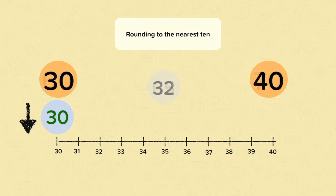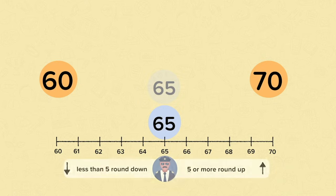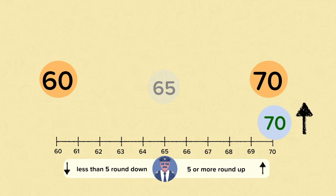Let's look at another example, this time 65. It's between 60 and 70. If we put it on the number line, we still can't see whether it's closer to 60 or 70, because it's exactly in the middle. So let's have a look at the actual rounding rules. If we're rounding to the nearest ten, we go to the tens column and one space to the right, so now we're looking at the ones column. If the digit is less than five, we round down. If the digit is five or more, we round up. So in this case, we round up to 70.